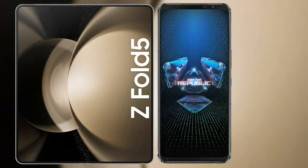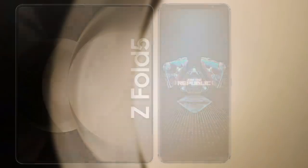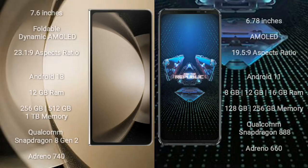I will compare the new Samsung Galaxy Z Fold 5 with Asus ROG Phone 5. Samsung Galaxy Z Fold 5 comes with a 7.6-inch foldable dynamic AMOLED display and aspect ratio 23:10:9. Asus ROG Phone 5 comes with a 6.78-inch AMOLED display and aspect ratio 19.5:9.